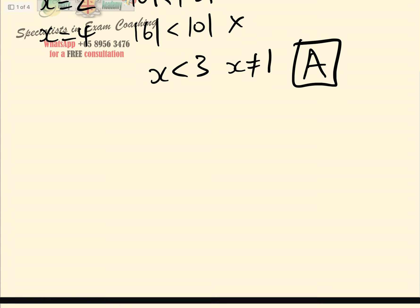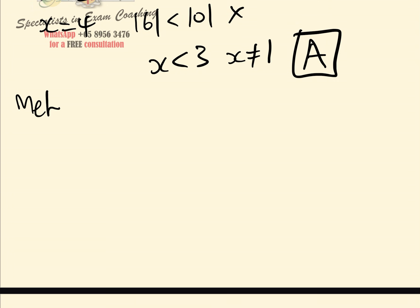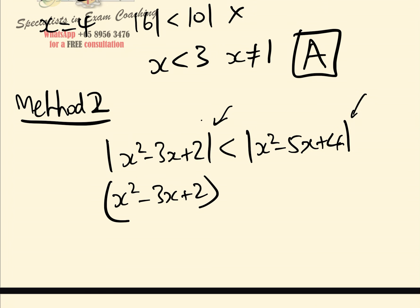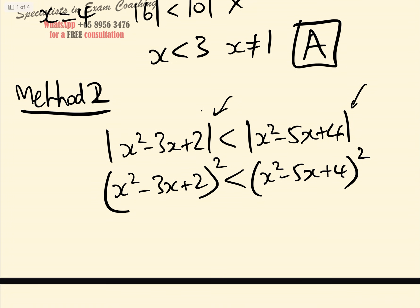That was Method 1 — a little long. Let's look at Method 2. We have mod(x squared minus 3x plus 2) less than mod(x squared minus 5x plus 4). Since both sides are positive, squaring both sides is perfectly acceptable and the inequality holds.